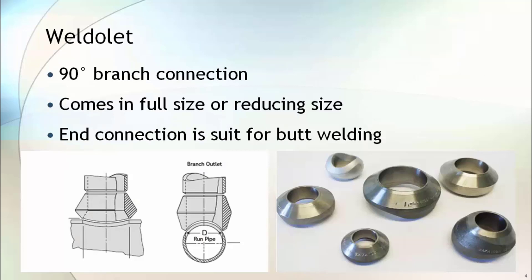Weldolet is a 90-degree branch connection. It comes in full size or reducing size. Full size is when you take a branch connection of the same size as the run pipe, and reducing size is when the branch size is less than the run pipe size. Weldolet end connections are suitable for butt weld type joints.